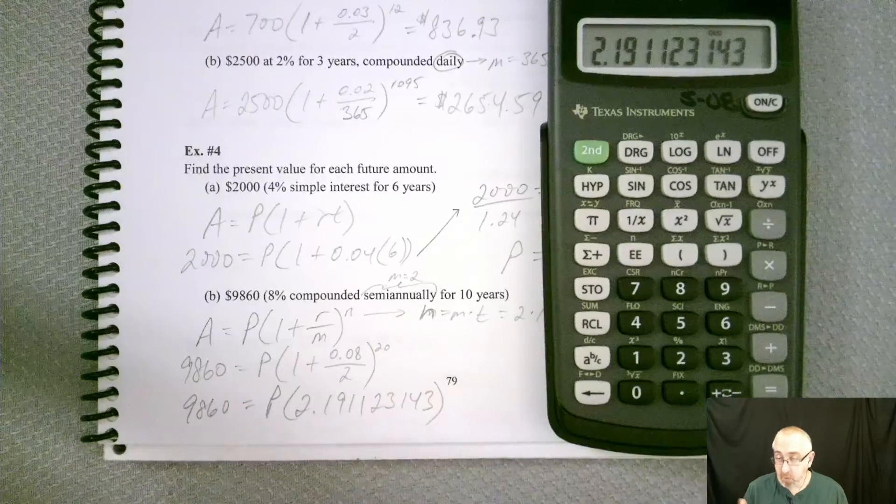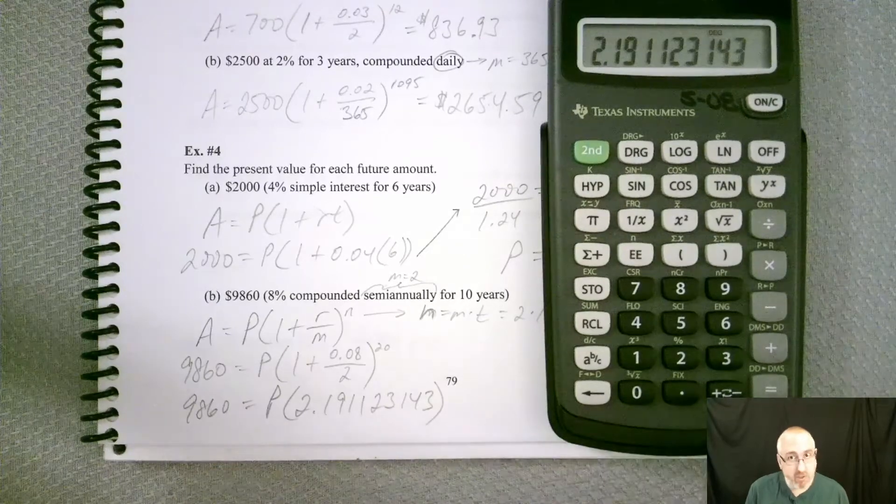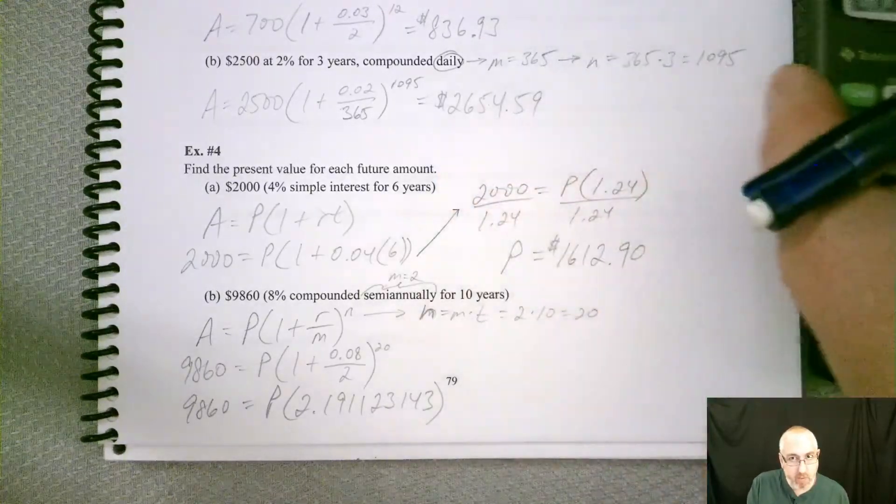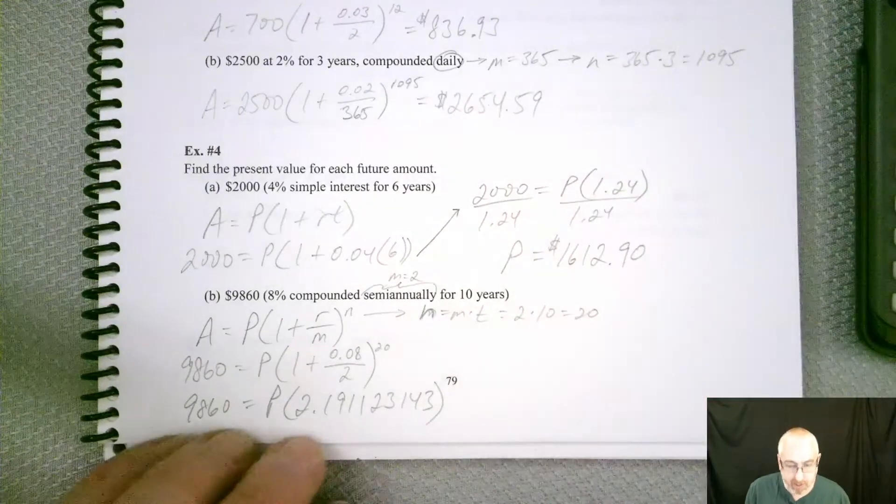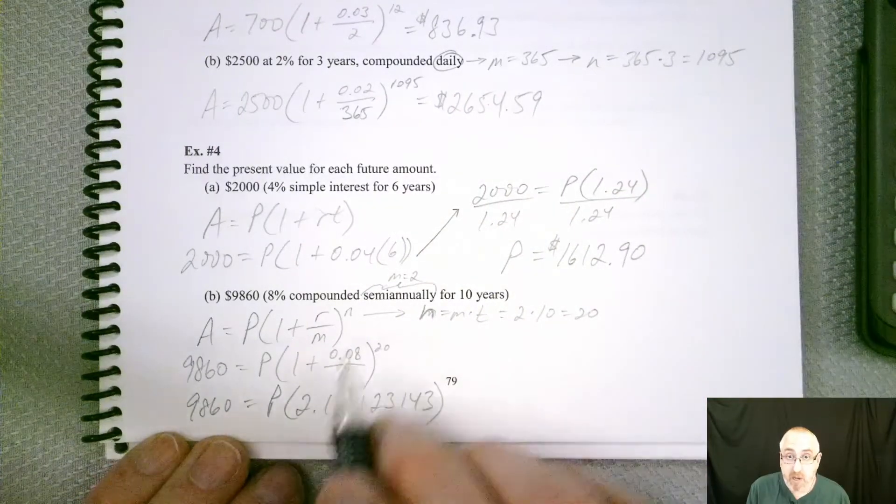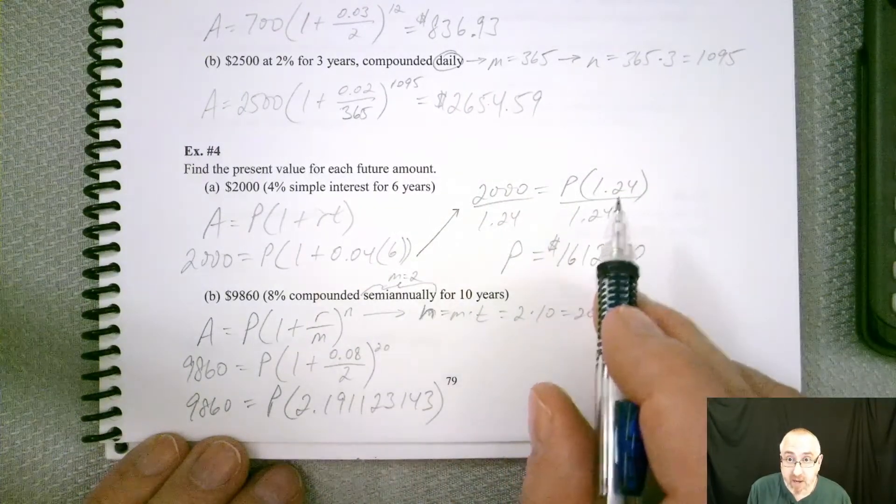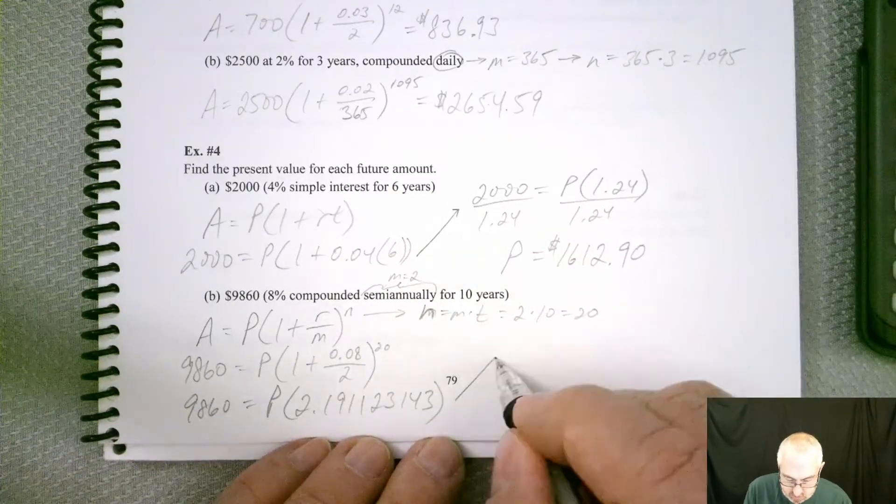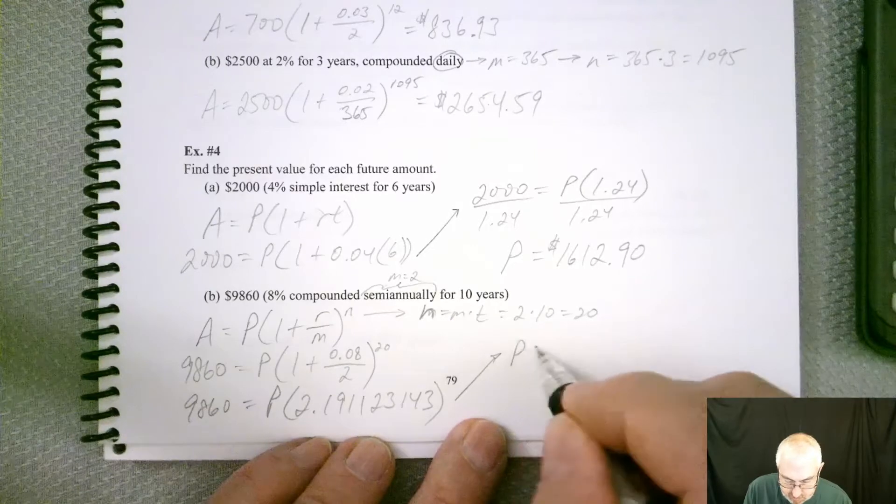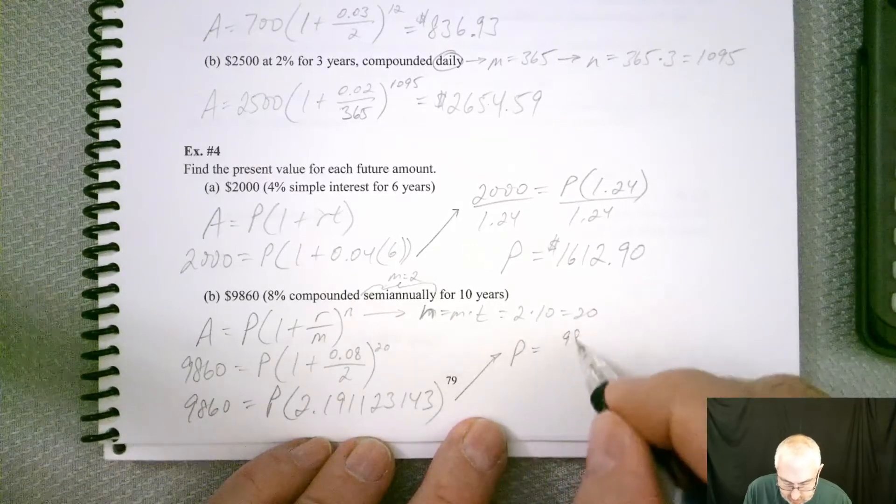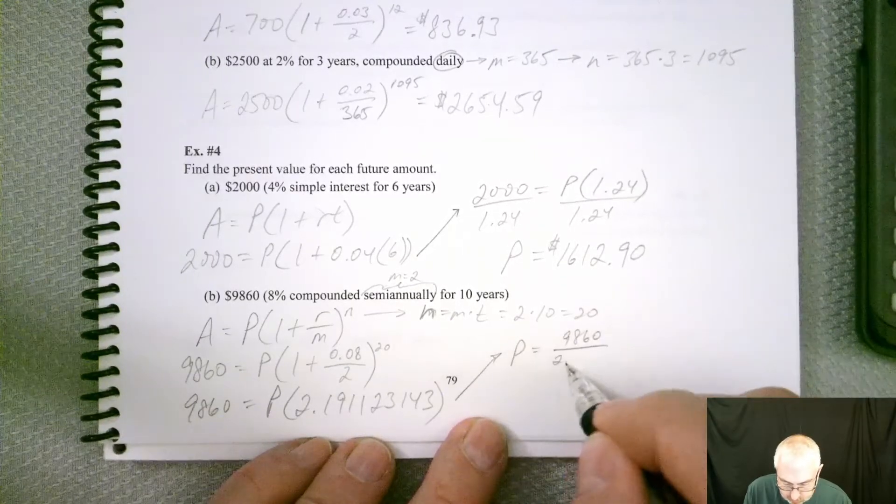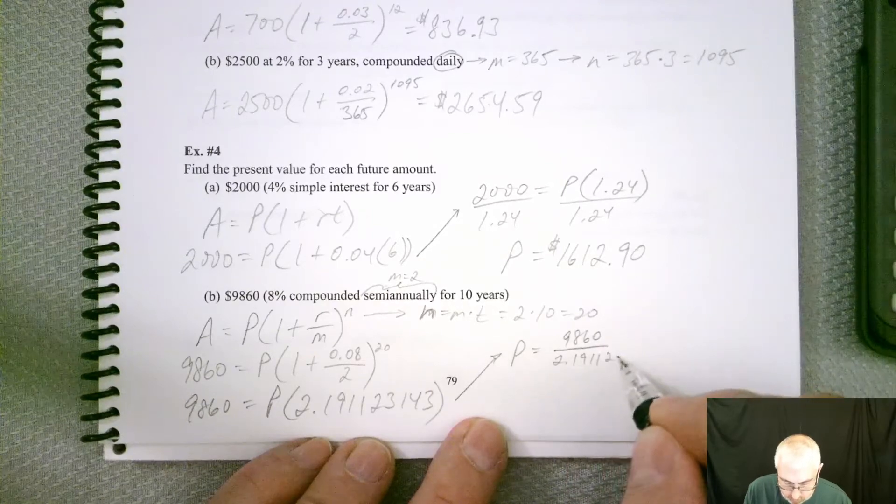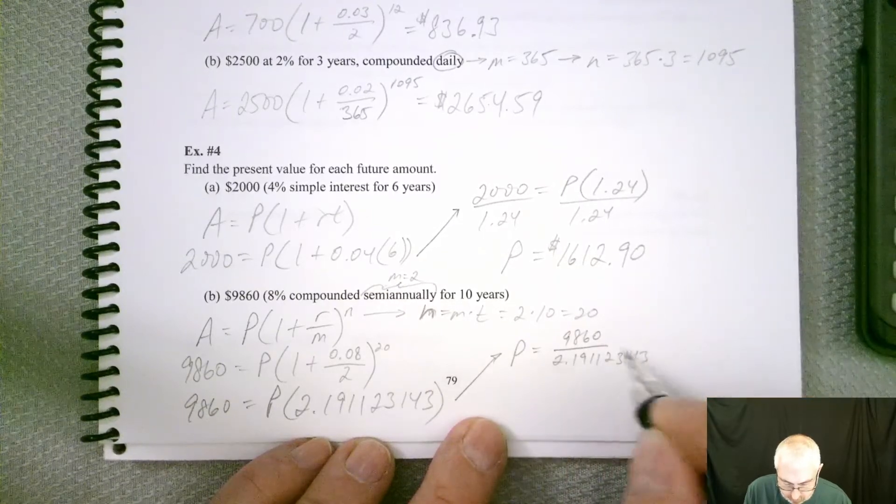Okay, I'm going to show you the way that we're currently doing it, but I'm going to show you another little trick that you might like a little better. So same as we did up here, once we got that number down, we had to divide by it. So we had to divide by this whole mess. So we got P is equal to 9,860 divided by 2.191123143.